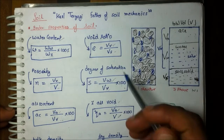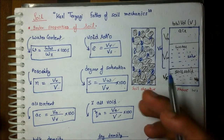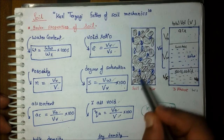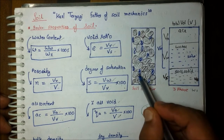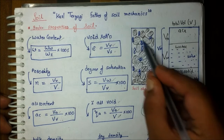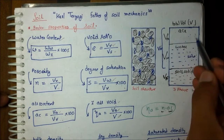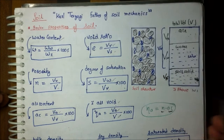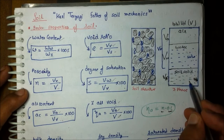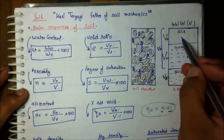In soil mechanics, firstly we have to discuss the index properties — the ABCs of soil. In soil, the structure generally consists of soil solids, water molecules, and some spaces of air. We can describe it in a three-phase diagram: at the bottom it is soil solids, then water, and then air.